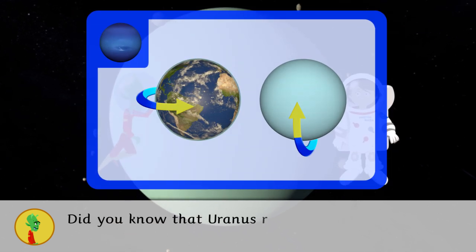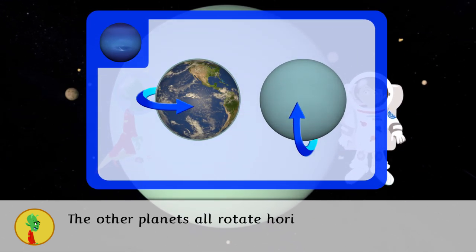Did you know that Uranus rotates vertically? The other planets all rotate horizontally.